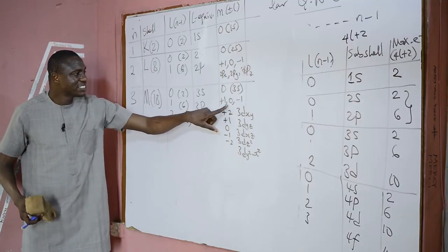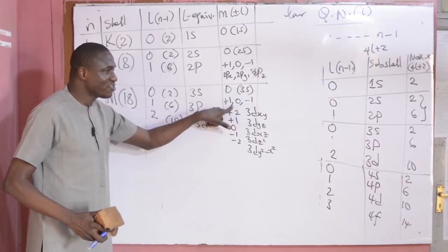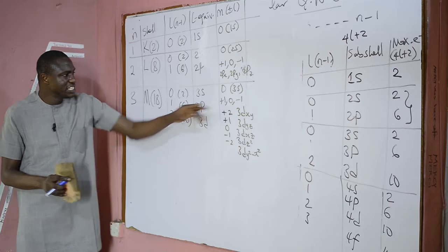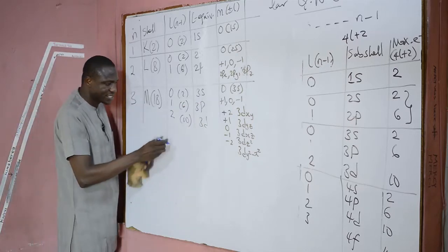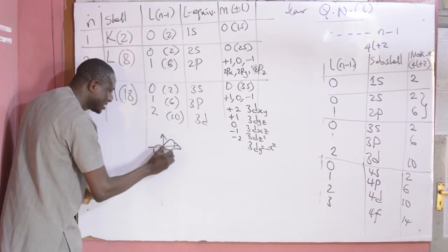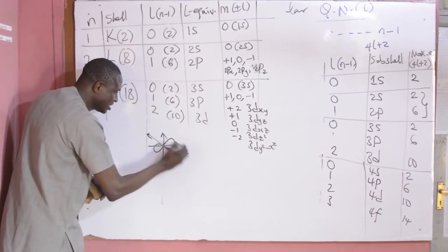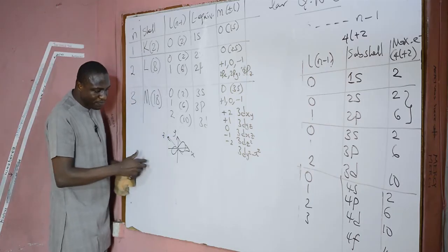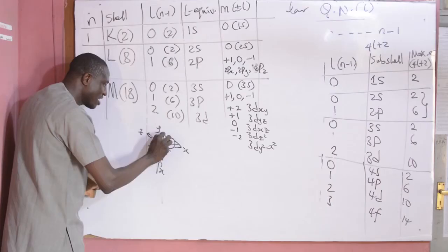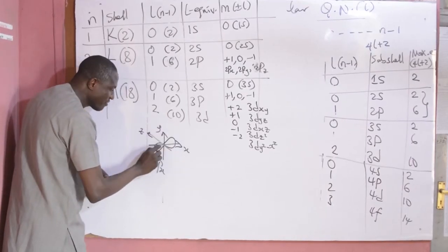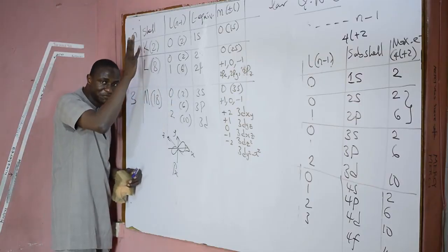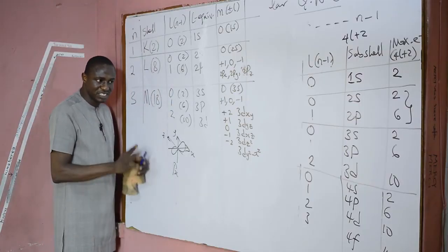The difference in shape of the three orbitals of P is just the orientation. For PX, the orbital faces the X axis of the coordinate. For PY, the orbital faces the Y axis. While for PZ, the orbital faces the Z axis. The three orbitals have the same shape but different geometry.